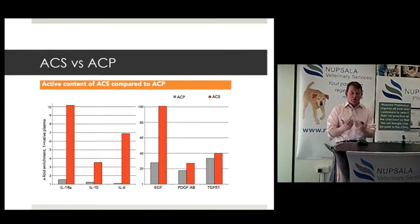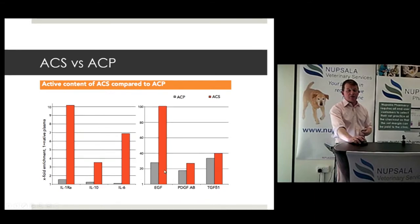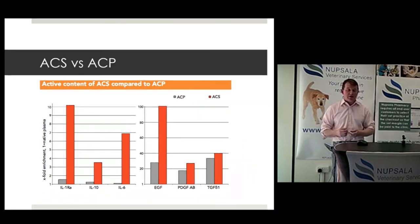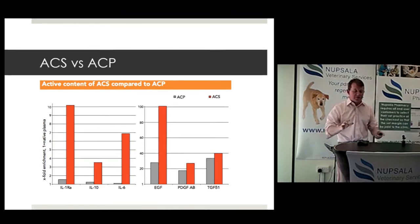The clot and the stress you place on the cells within it is a vital component of ACS. On the growth factor side, TGF-beta is actually pro-IL-1, so you can get factors that adversely affect an inflammatory situation. ACS and ACP are not the same — don't fall into the trap of thinking they are. They're very different in their makeup.